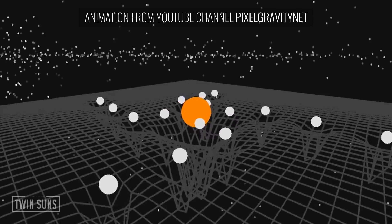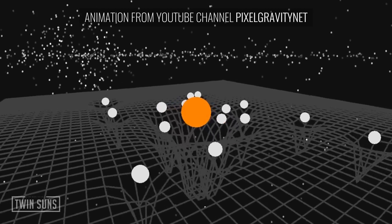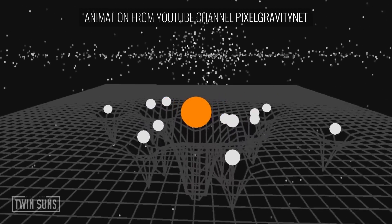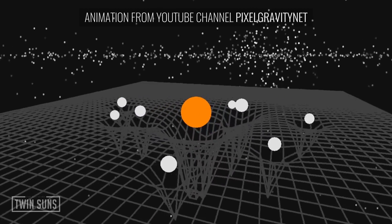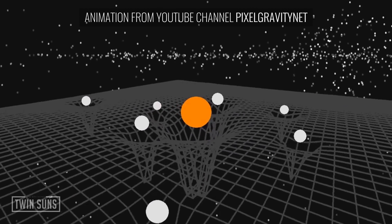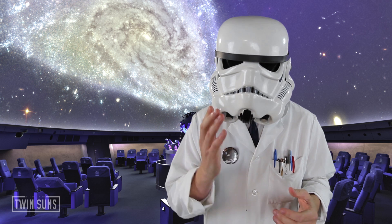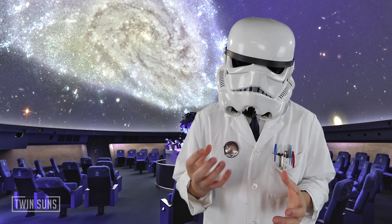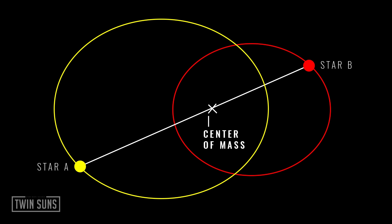Planets orbit stars because of gravity. But that gravity doesn't just impact smaller bodies, planets, and satellites — it impacts everything. A binary system contains two stars that orbit a common center of mass. They are gravitationally bound.